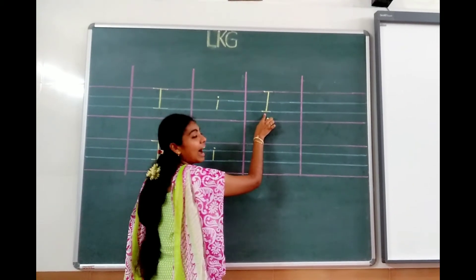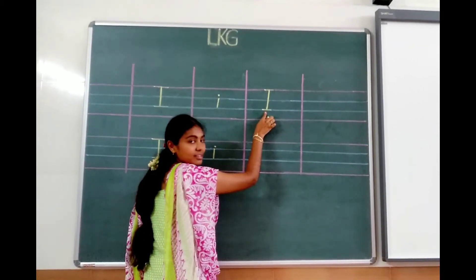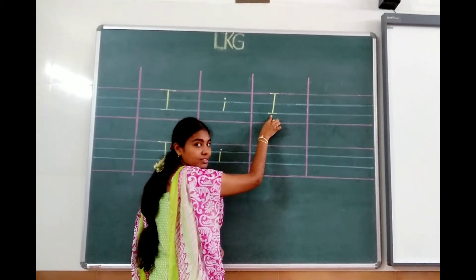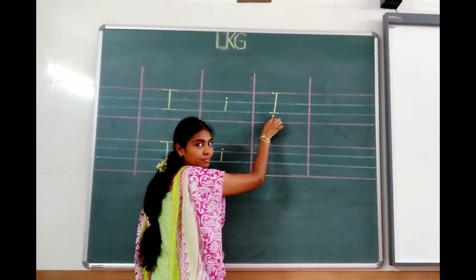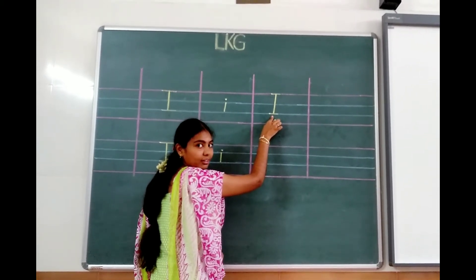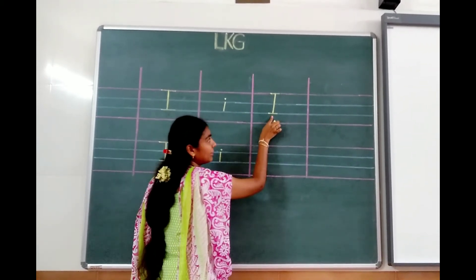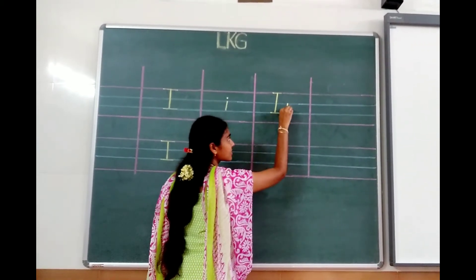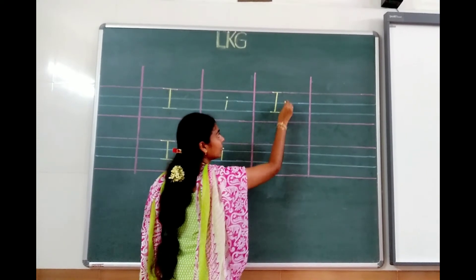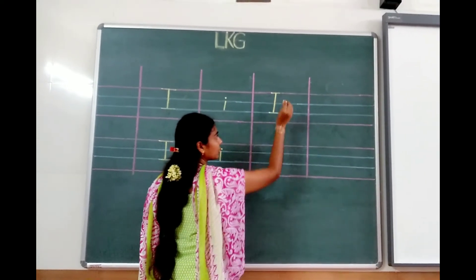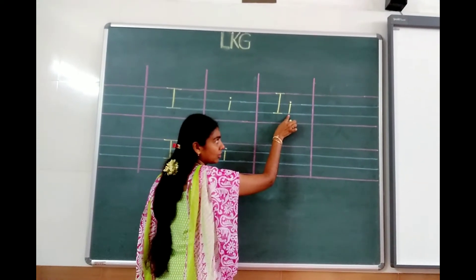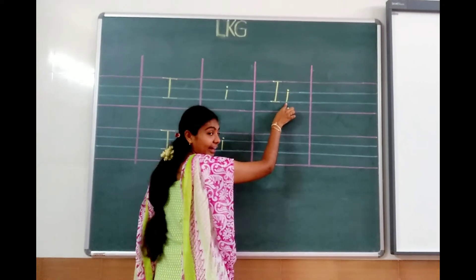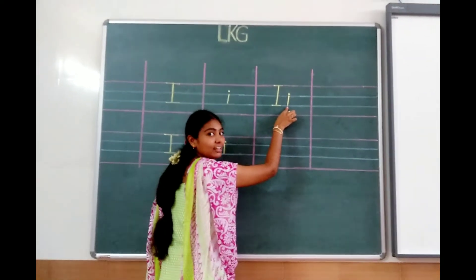So capital I — what is the sound of I? What is the sound of I? E. Capital I with small I — standing line. What is the sound of small I? E.